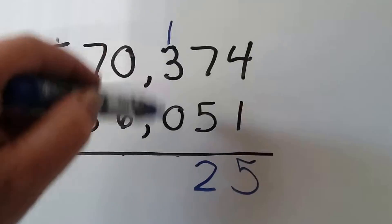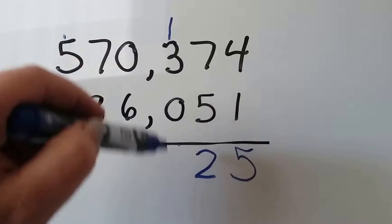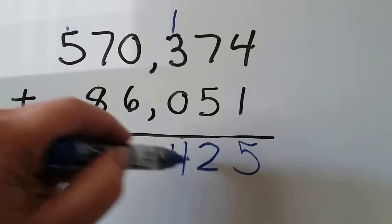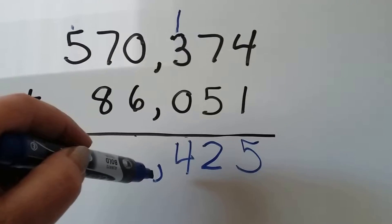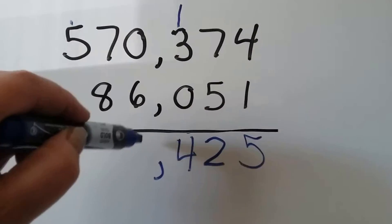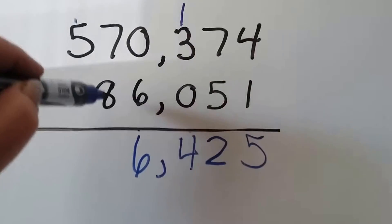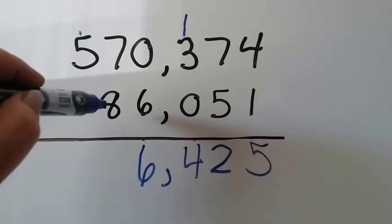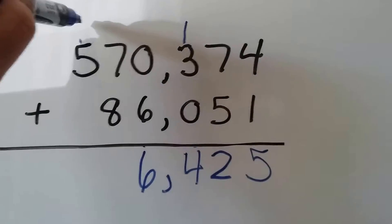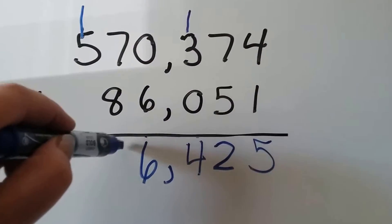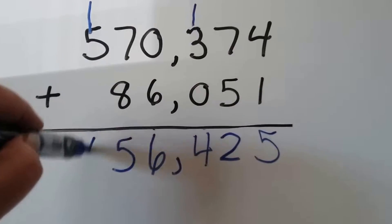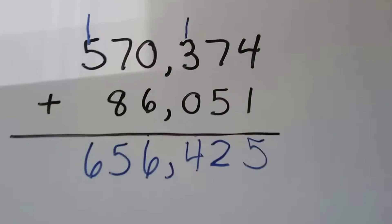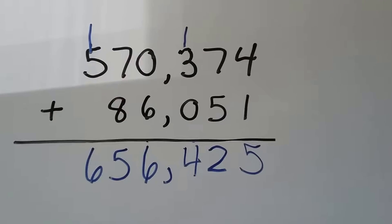3 and 1 is 4. With 0, it's still 4. We put our comma in a nice, pretty column coming down. 0 and 6 is 6. 7 plus 8. Well, 7 plus 7 is 14. So 7 plus 8 must be 15. Put the 1 up here and the 5 here. And 1 plus 5 is 6. We have 656,425.